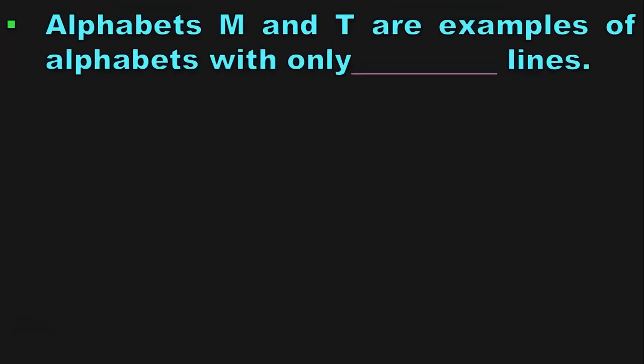Alphabets M and T are examples of alphabets with only straight lines. In alphabet M and T, you can see that they are made up of only straight lines. What are straight lines? A standing line, sleeping line and a slanting line together are called straight lines.